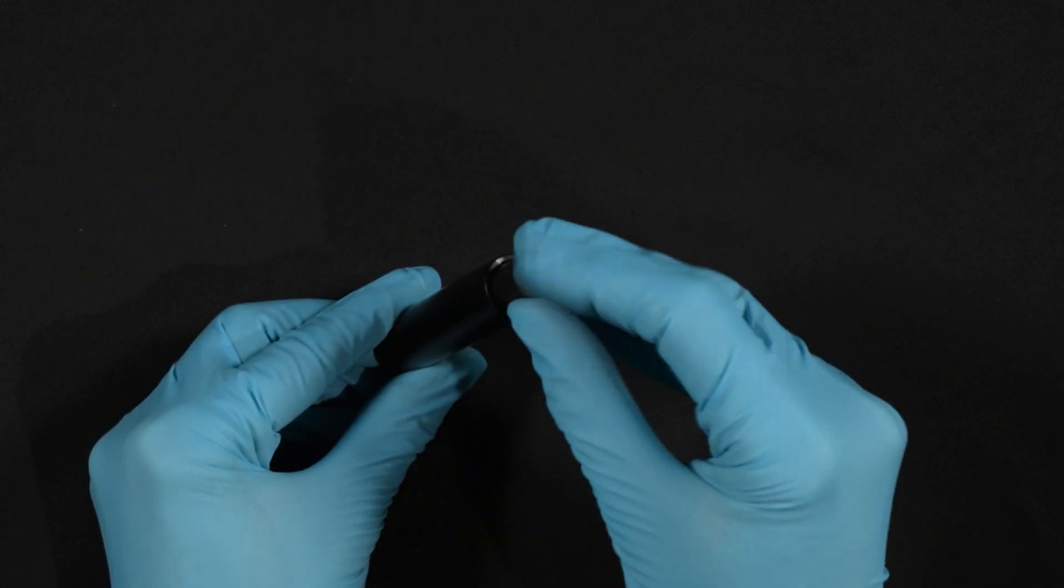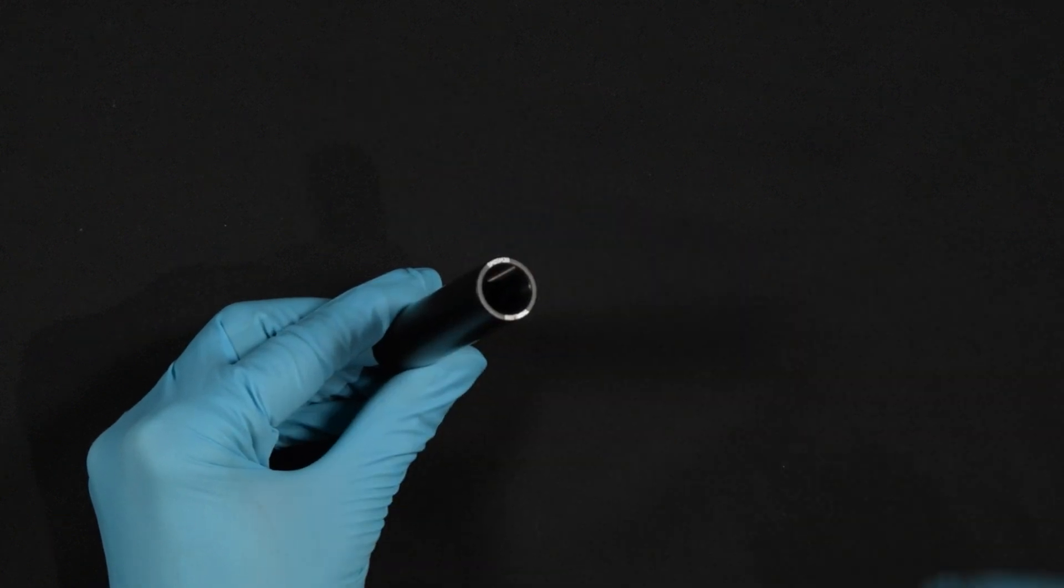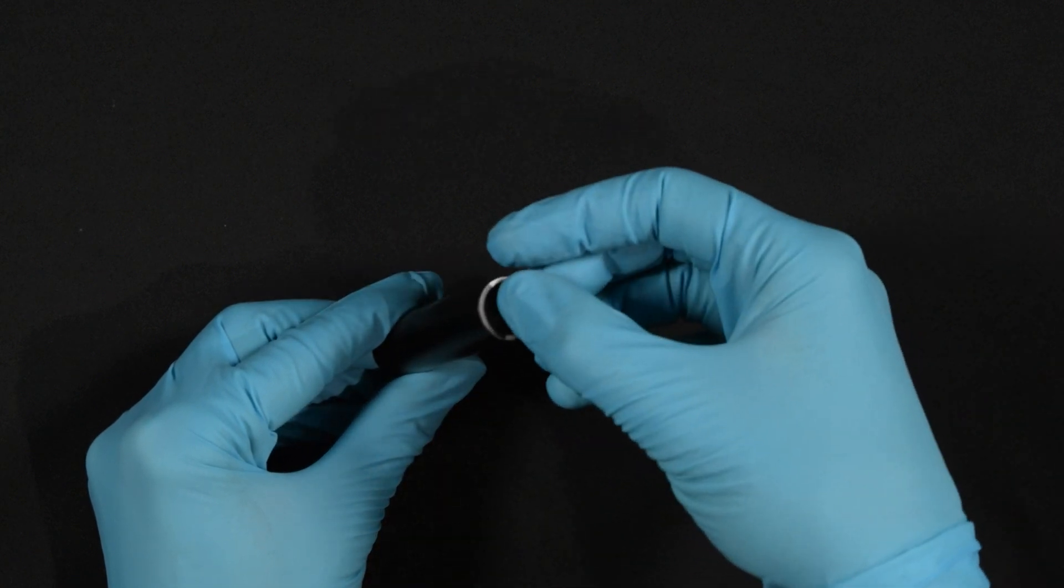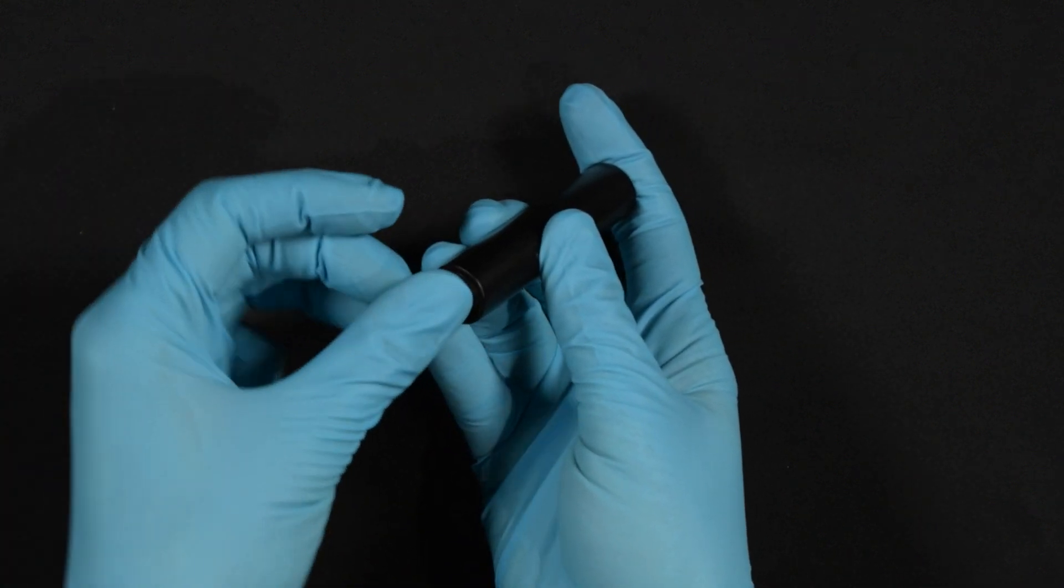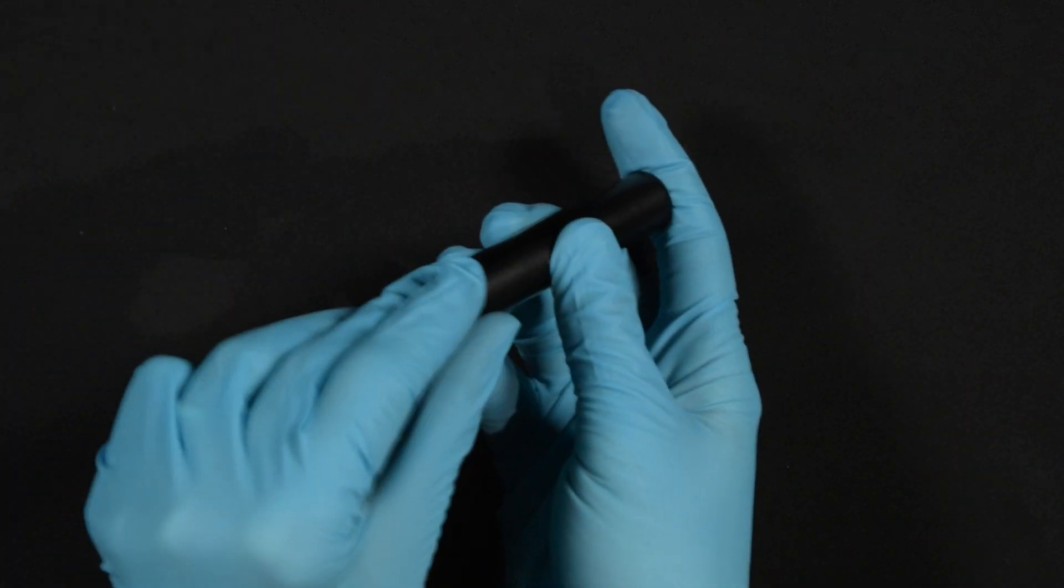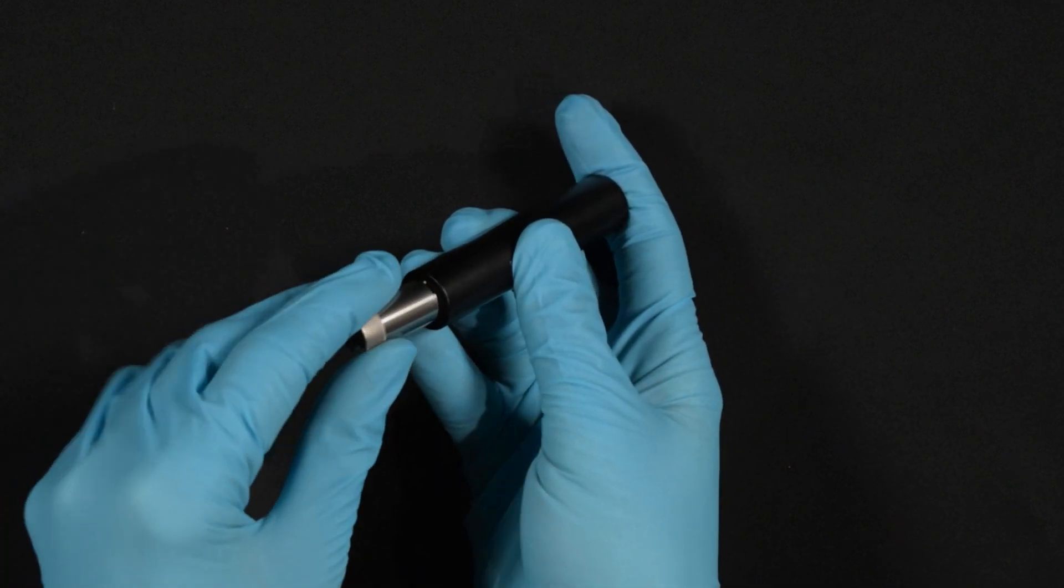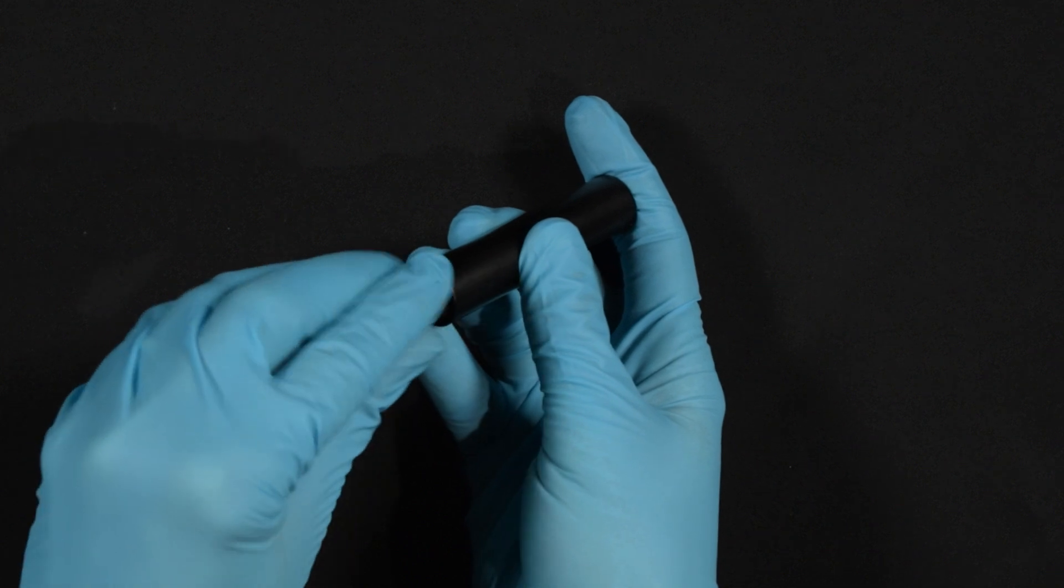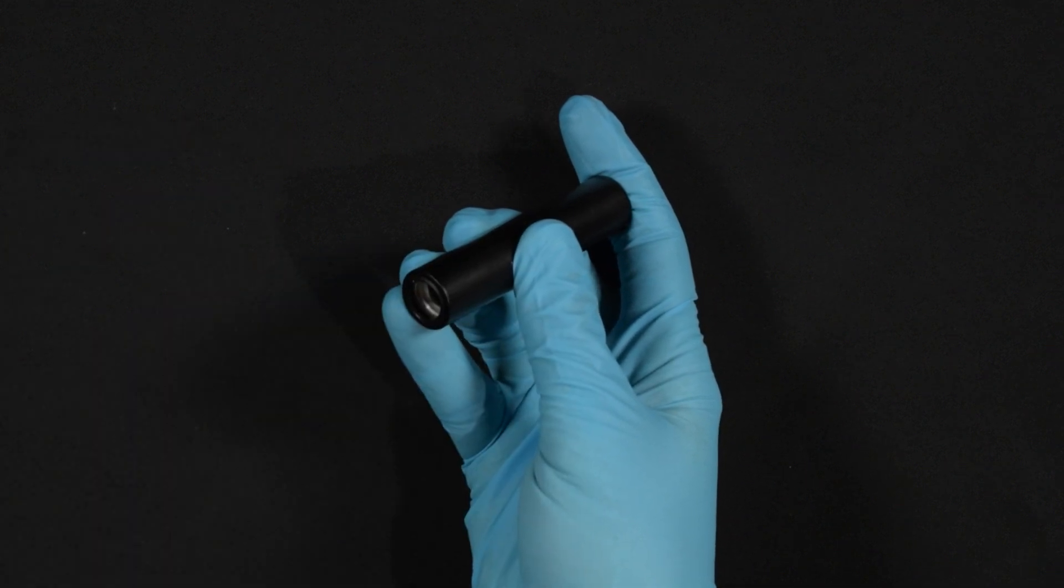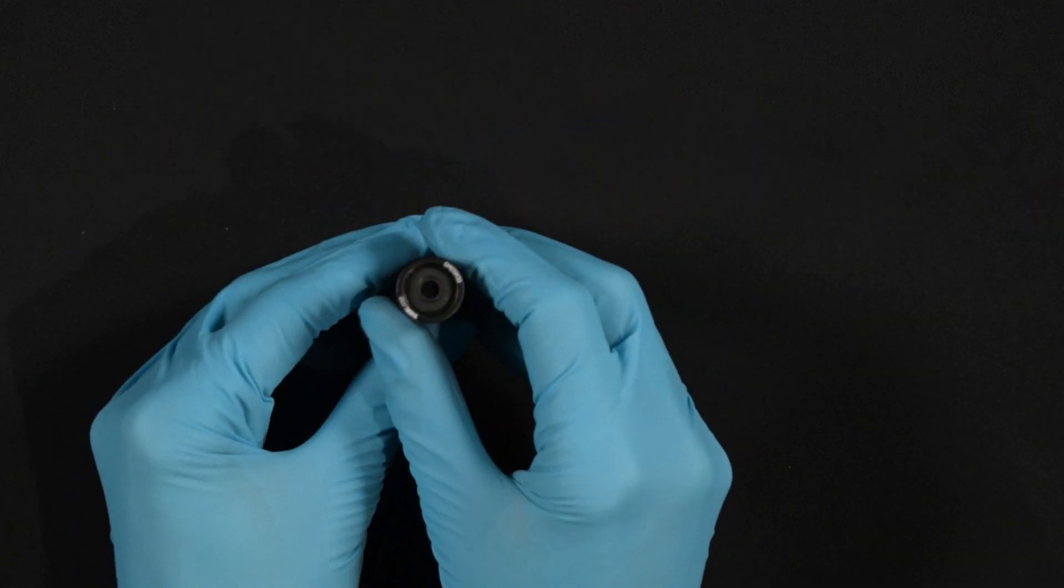Insert all these elements into the threaded SM05 tube using some gentle force. Add the 37.8 mm spacer and the aperture on top of that from the other side of the tube.